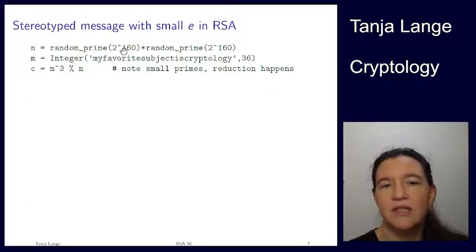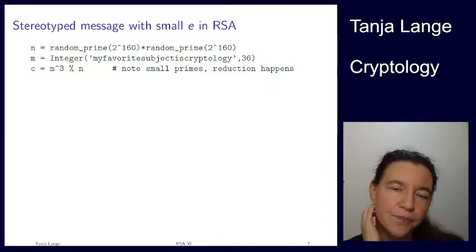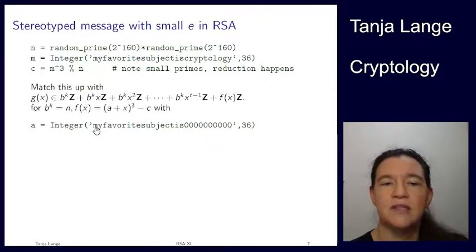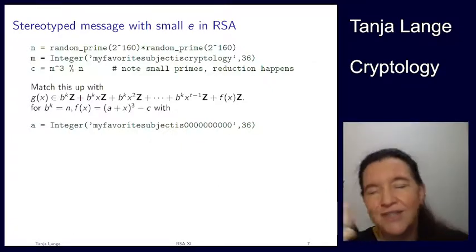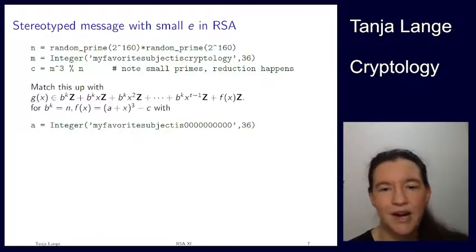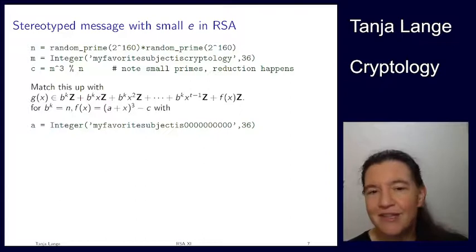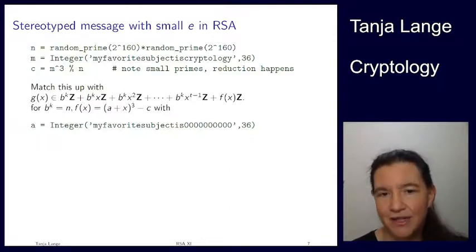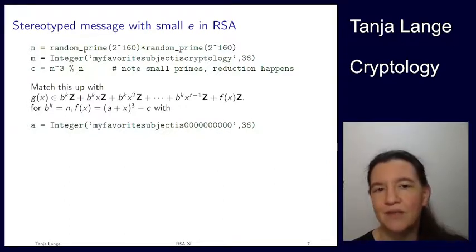Because p and q are small you do see a modular reduction, but this is still a weak system. Assuming this is a form text — you know it starts with 'my favorite subject is' and there's just a few unknown characters at the end — coincidentally as long as 'cryptology'. A more realistic example would be 'password of the day is' followed by eight alphanumeric characters.